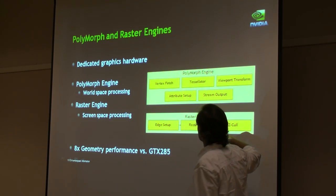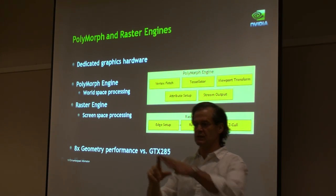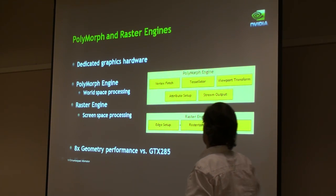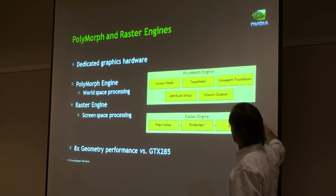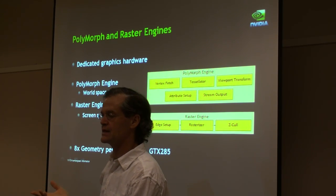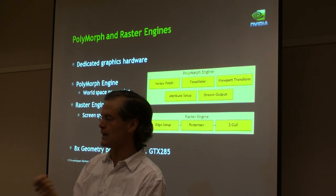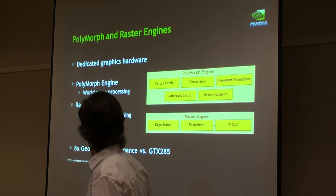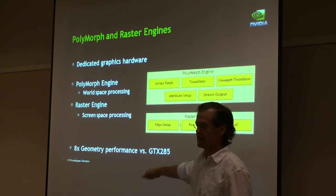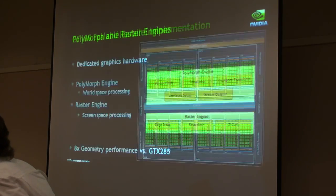Down in raster, the primary operations are: first, computing edge equations that tell you where the triangles are and make rasterization efficient. Coming out of raster, you go into Z-Cull, which takes care of occlusion culling and efficiently discards geometry before doing sample-by-sample tests against the Z-Buffer. With this change, as mentioned at the outset, we got an 8x boost in geometry performance.